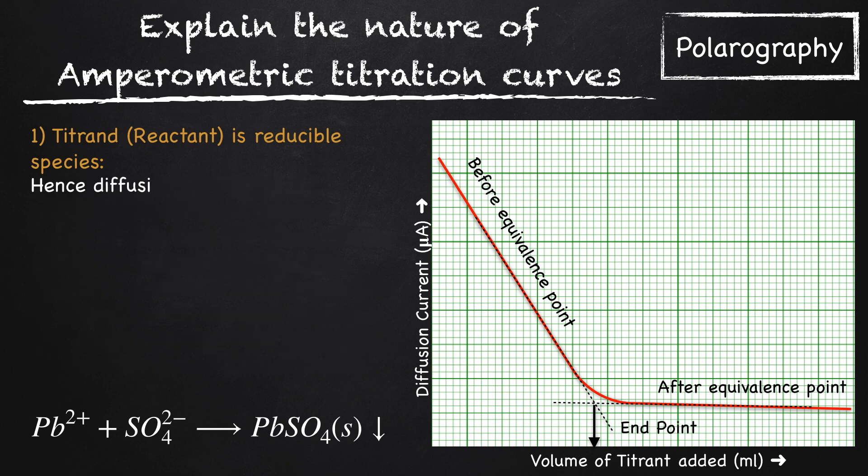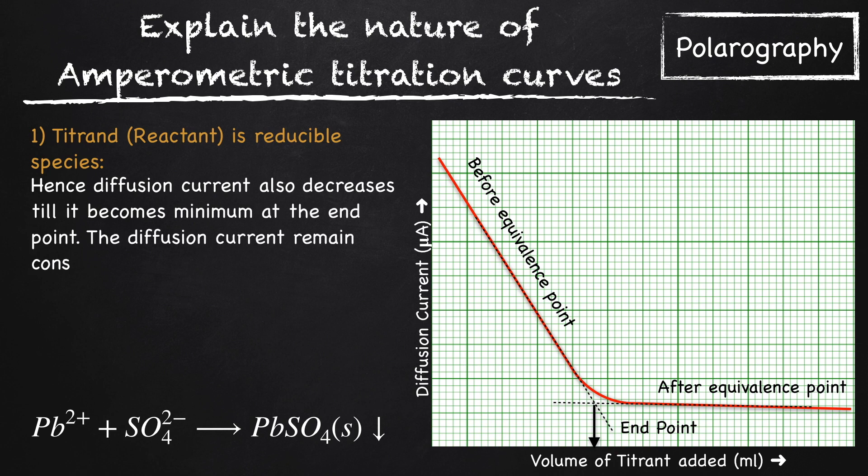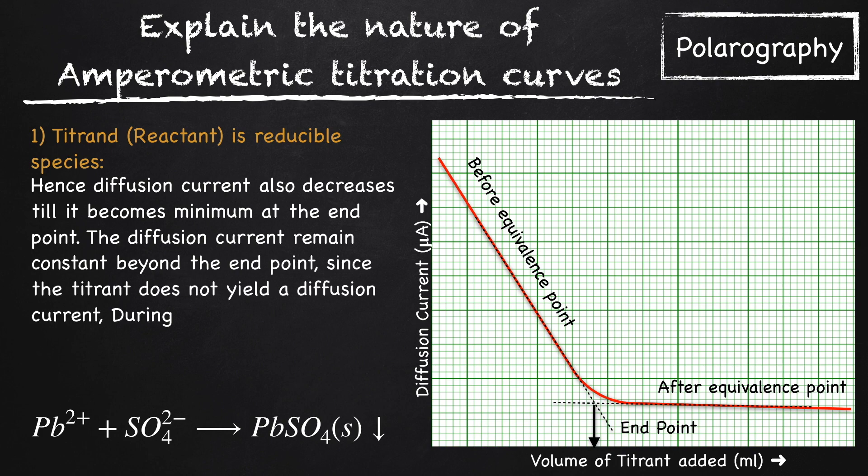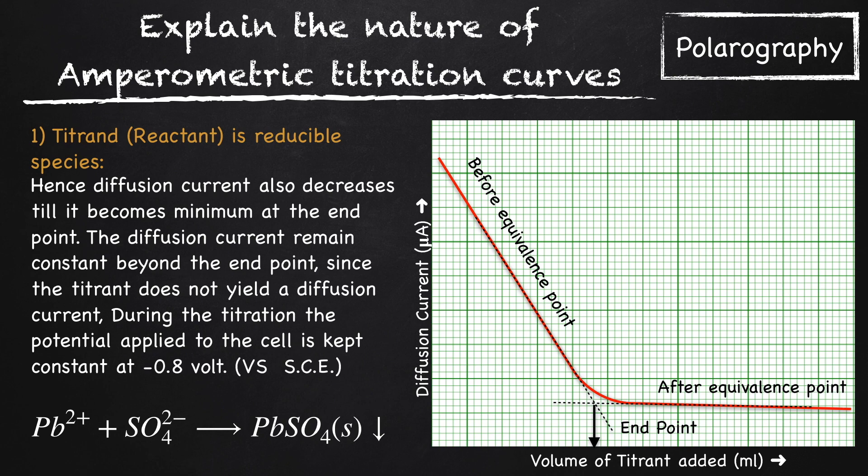Hence, diffusion current also decreases till it becomes minimum at the end point. The diffusion current remains constant beyond the end point, since the titrant does not yield a diffusion current. During the titration, the potential applied to the cell is kept constant at -0.8V against saturated calomel electrode.